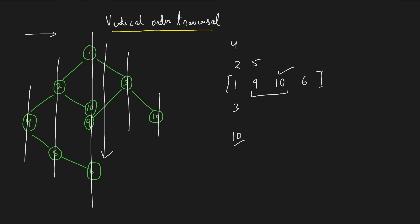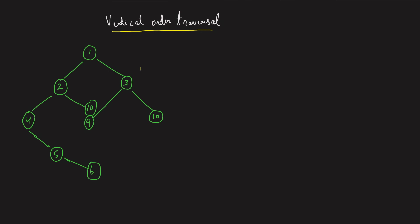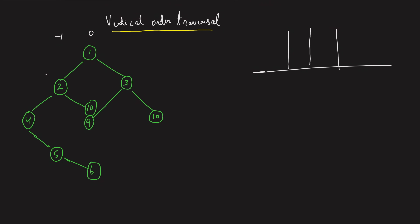You need to return a vector of vectors or a list of lists describing the vertical order traversal of the binary tree. To solve this, we can treat each vertical line as a point on the x-axis — so the root's vertical is 0, going left is minus-1, minus-2, and going right is plus-1, plus-2.